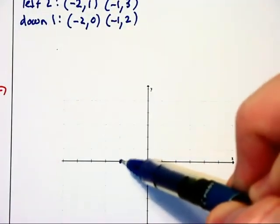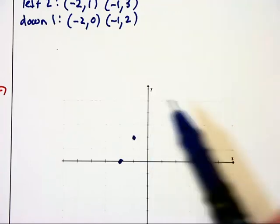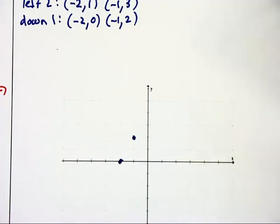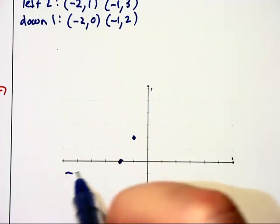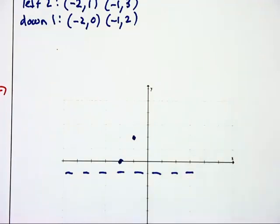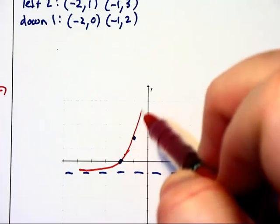When I look at these two points and plot them, (-2,0) is right there and (-1,2) is right here. The horizontal asymptote, which is normally on the x-axis, is down 1 unit. So instead it will be at the line y equals negative 1. We can very easily sketch in this graph right here.